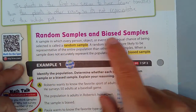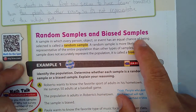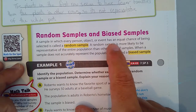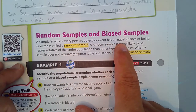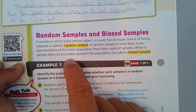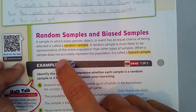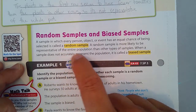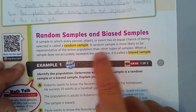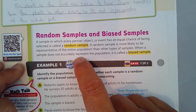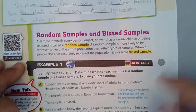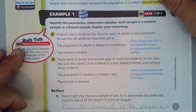Random samples and biased samples. A sample in which every person, object, or event has an equal chance of being selected is called a random sample. A random sample is more likely to be representative of the entire population than other types of samples. When a sample does not accurately represent the population, it's called a biased sample. We're going to see a couple of examples of that.